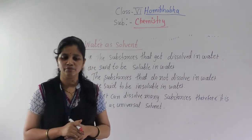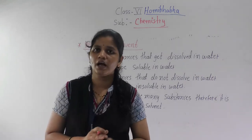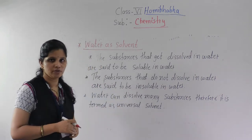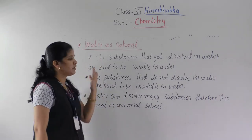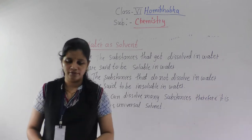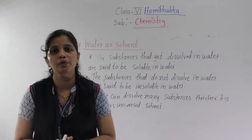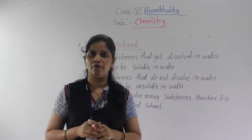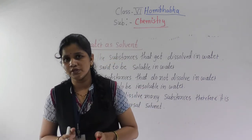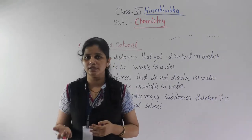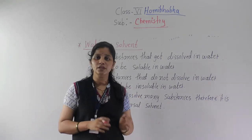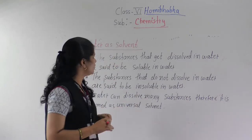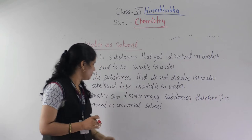Insoluble substances means those substances that are not dissolved in water are known as insoluble substances. Now why is this point called water as a solvent? Because water is known as a universal solvent. Most substances — many substances — are dissolved in water, so water is known as a universal solvent.